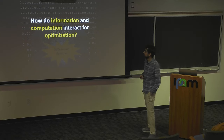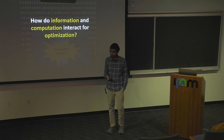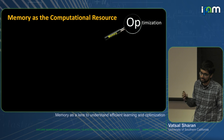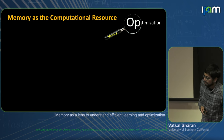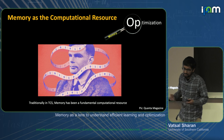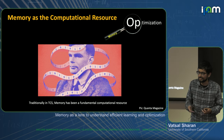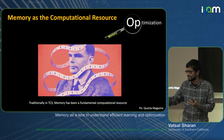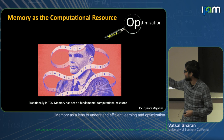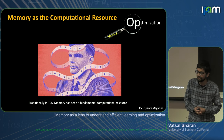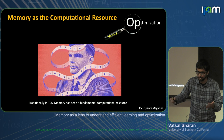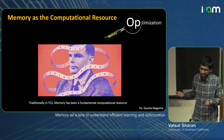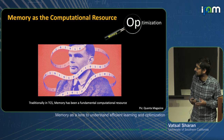The main metric of computational cost I'll be looking at is the memory that the algorithm uses — that'll be the computational resource I'll consider throughout the talk. Traditionally in TCS, memory has been a fundamental computational resource, starting even with the Turing machine. The two most fundamental resources there are the number of operations the Turing machine takes and the length of the tape — the memory it uses. There's been a very long distinguished line of work on the role of memory in TCS.